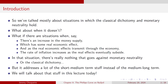Mostly, what we've talked about so far are situations where the classical dichotomy and monetary neutrality hold. But what about when these don't hold? What if there are situations where there's an increase in the money supply and it has some real economic effect?